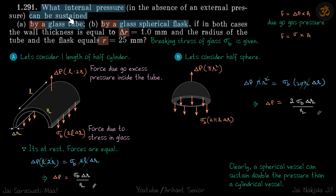What internal pressure can be sustained by a glass tube and by a glass spherical flask? If the thickness of the glass is delta r and radius of tube and flask both is r, we need to get the answer in terms of breaking stress of glass, that is sigma b.